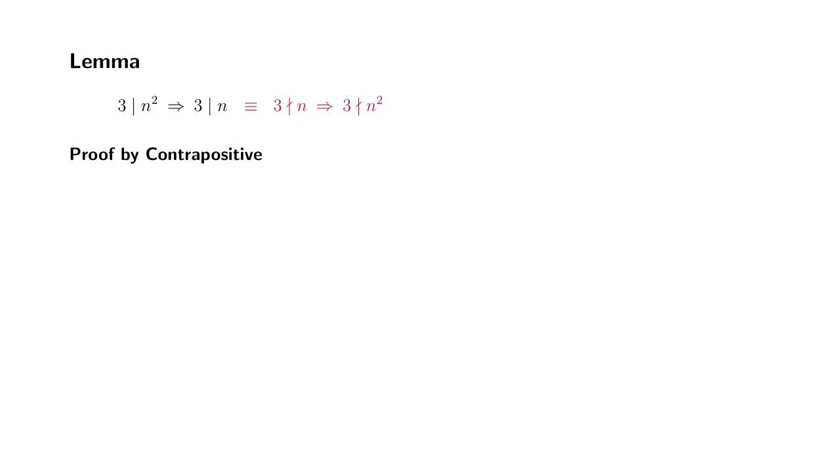So we're going to assume that 3 does not divide n. So which means what? If you divide by 3, you might get the remainder is 1 or remainder could be 2. So we're going to divide into two cases.